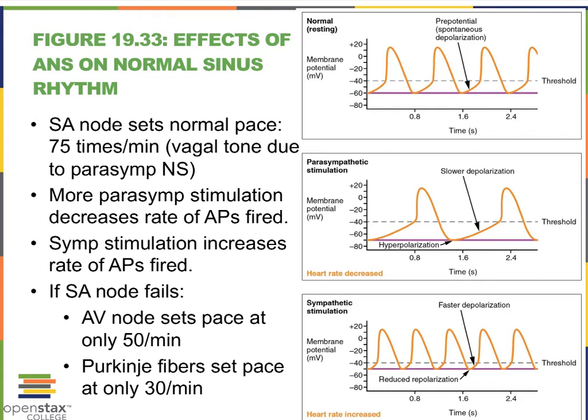That heart rate is a result of the SA node being influenced by the parasympathetic nervous system at rest. That is what we refer to as vagal tone. So when we're sitting in our chairs at rest, our heart expresses vagal tone, meaning the vagus nerves literally slow down the SA node. The intrinsic conduction system still does its job, but it's slowed down.